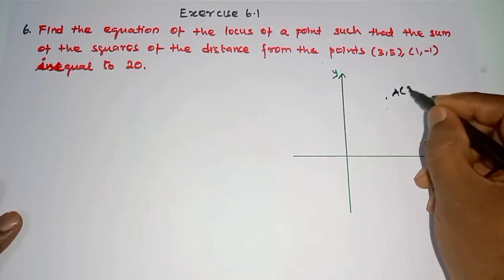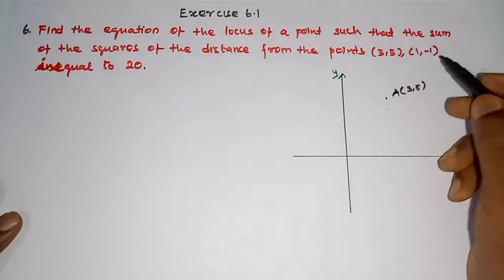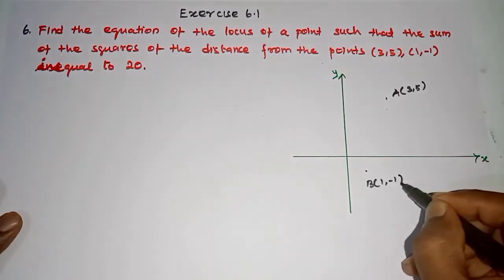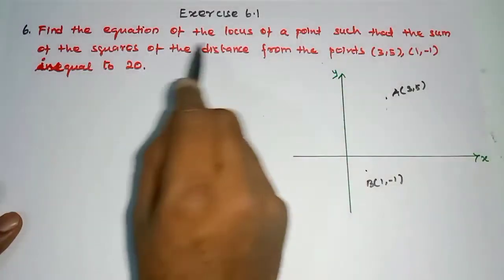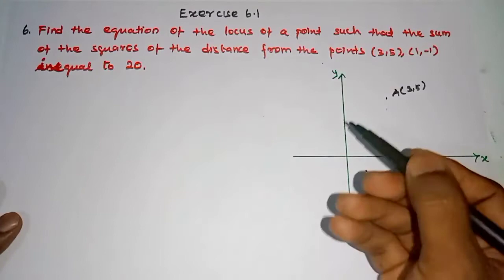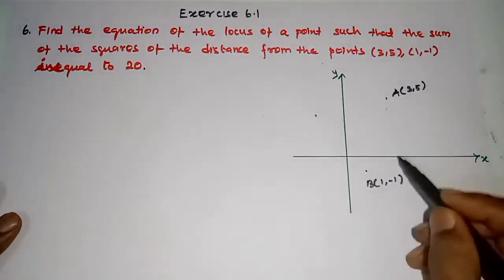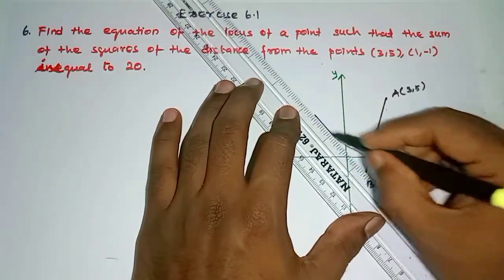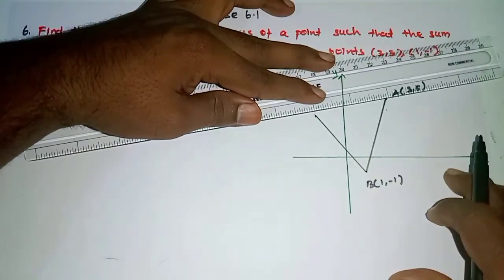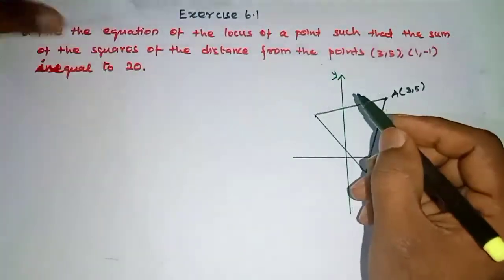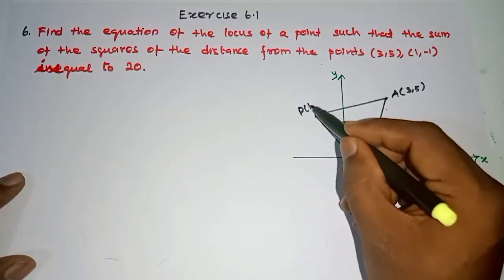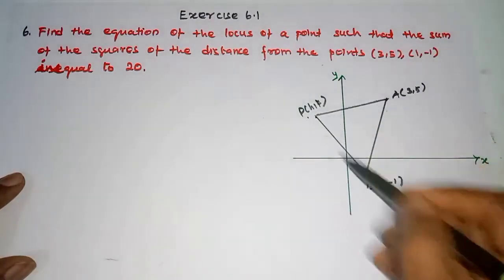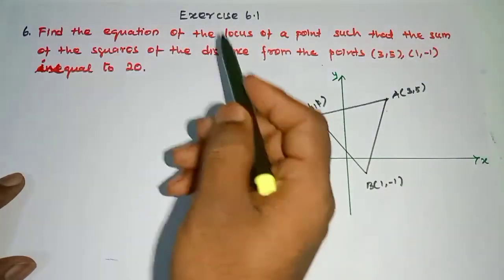So I will assume A is (3, 5). See, second point B is (1, -1). Now in the two points, in the locus point — the result of a point — it can be anywhere. So somewhere I put here. Now I put the locus pointer, let point P be (h, k). See A to P and B to P are the two distances — sum the squares and add, equal to 20.